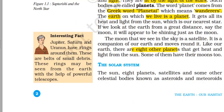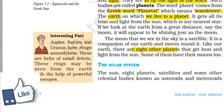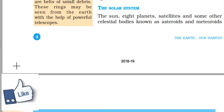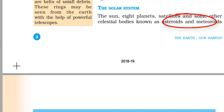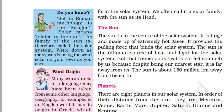In our solar system, there are eight planets just like Earth, but the only place which has life is Earth. The solar system is formed by the sun and the eight planets, along with satellites of the planets, asteroids, and meteoroids. They all form the solar system, and we often call it the solar family with the sun as its head.